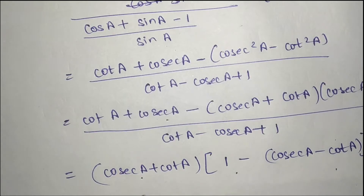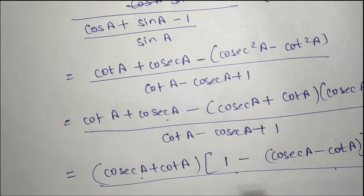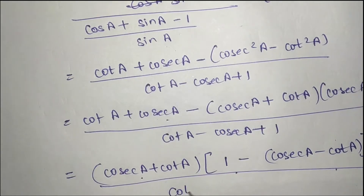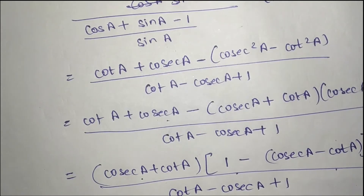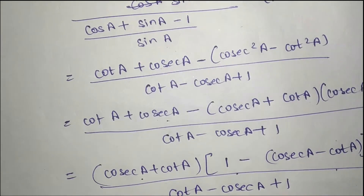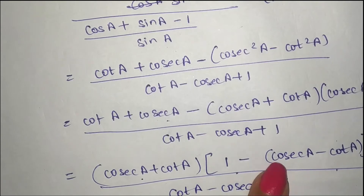Here we have minus 1, and here we have the value of cot a minus sec a plus 1. So this becomes a common factor.